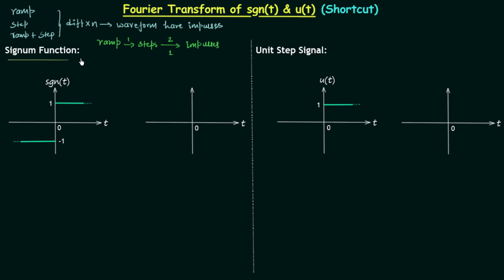The first example is the signum function and the second is the unit step signal. We have already calculated the Fourier transform of the signum function — we know it equals 2 over jω. Let's denote the signum function as x(t) in the time domain, and its Fourier transform 2/jω as X(jω), or simply X(ω). These are the notations we will use.